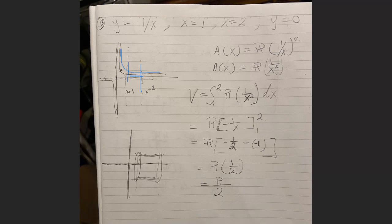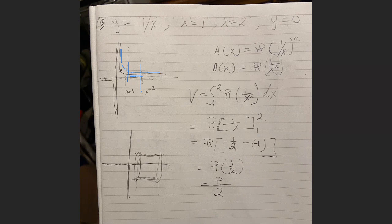The antiderivative of 1/x² is -1/x. Carlos plugs in the bounds 1 and 2, obtaining pi times [(-1/2) - (-1)] = pi times (1/2). The final answer is π/2.